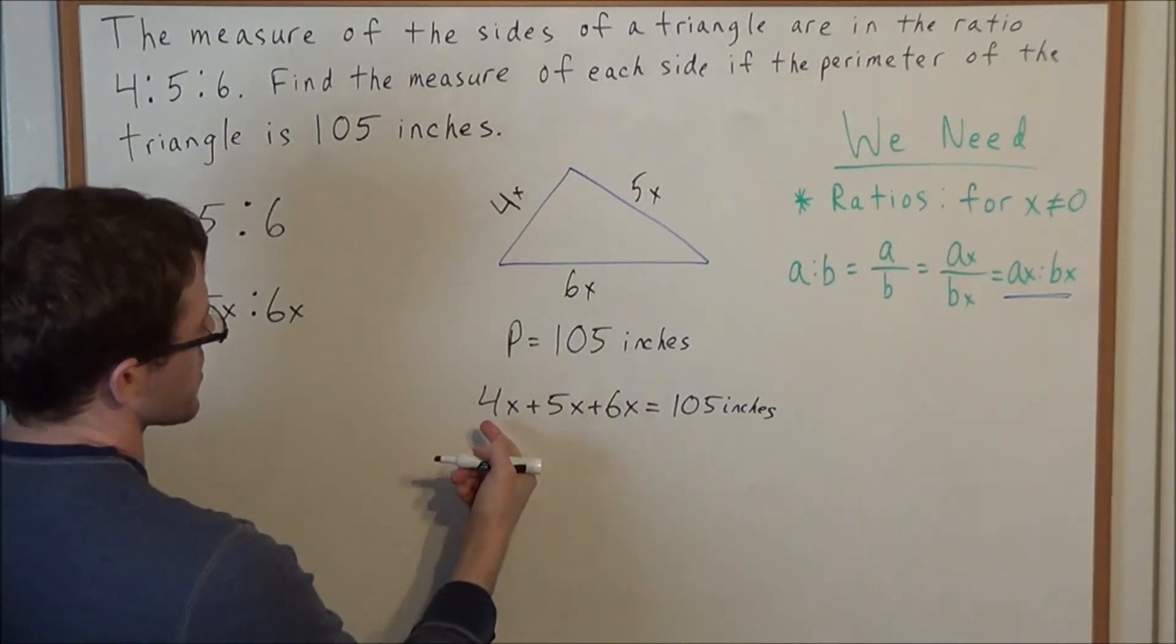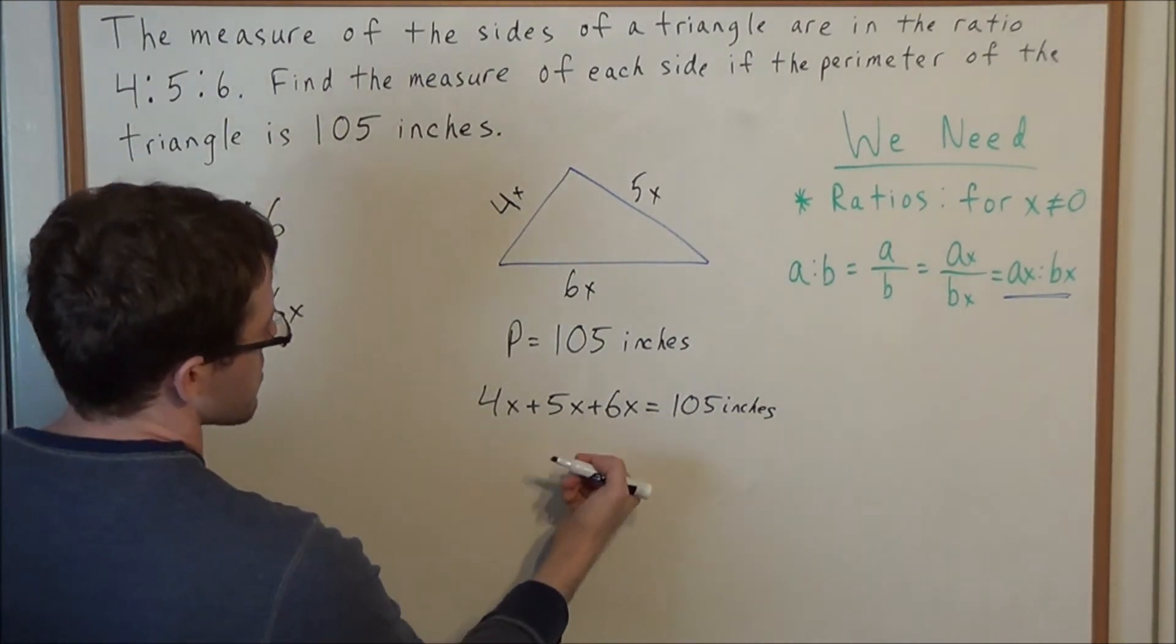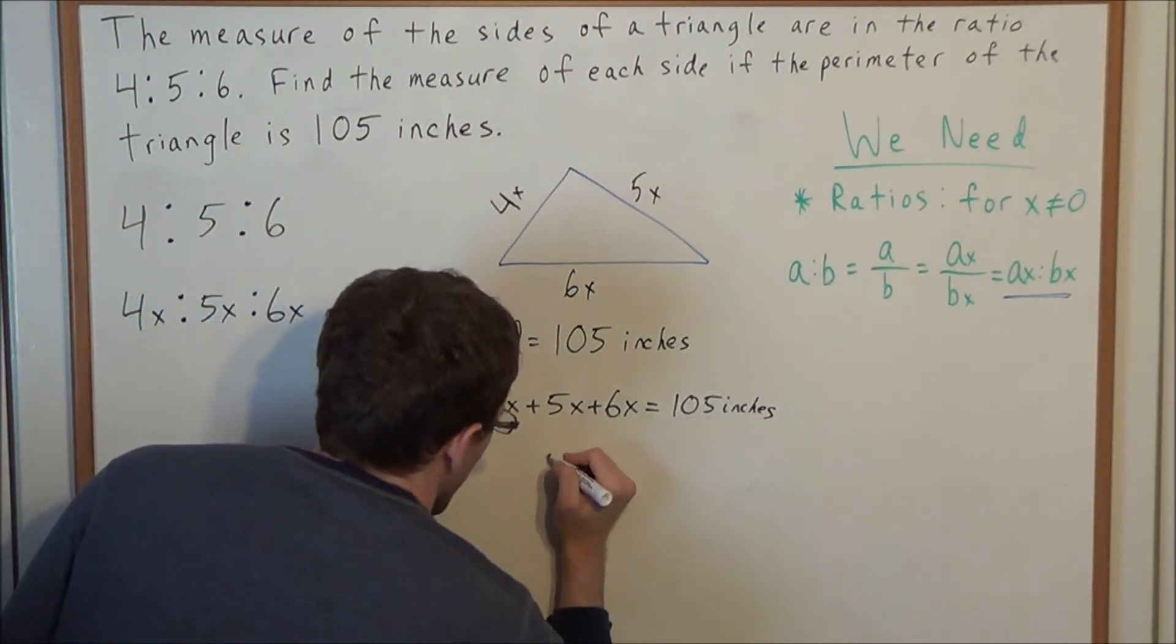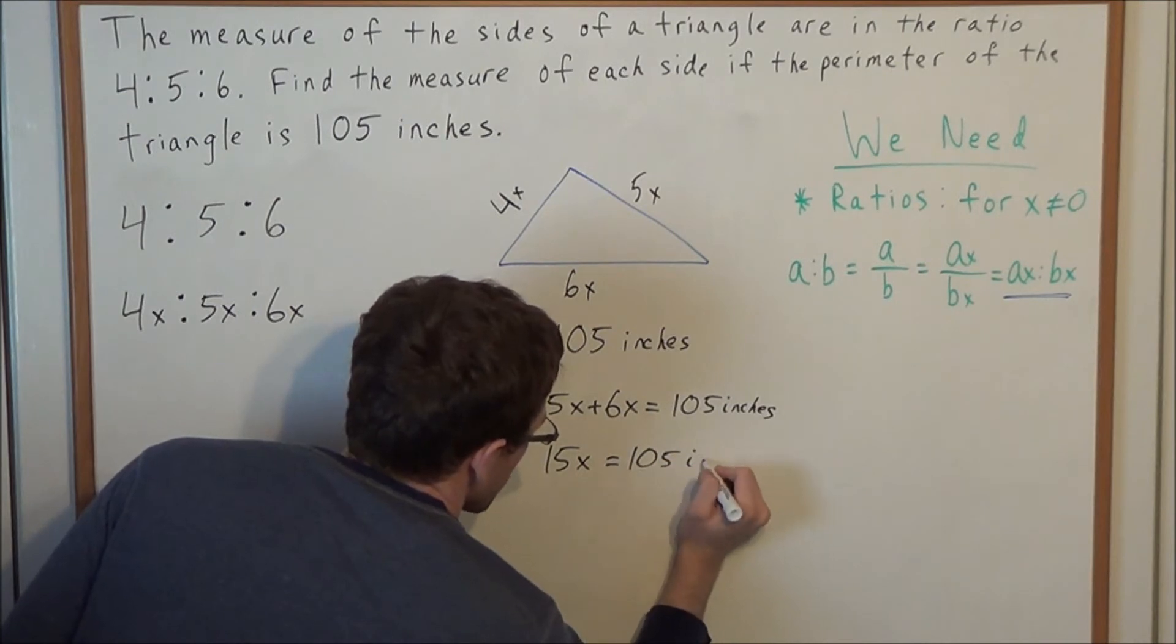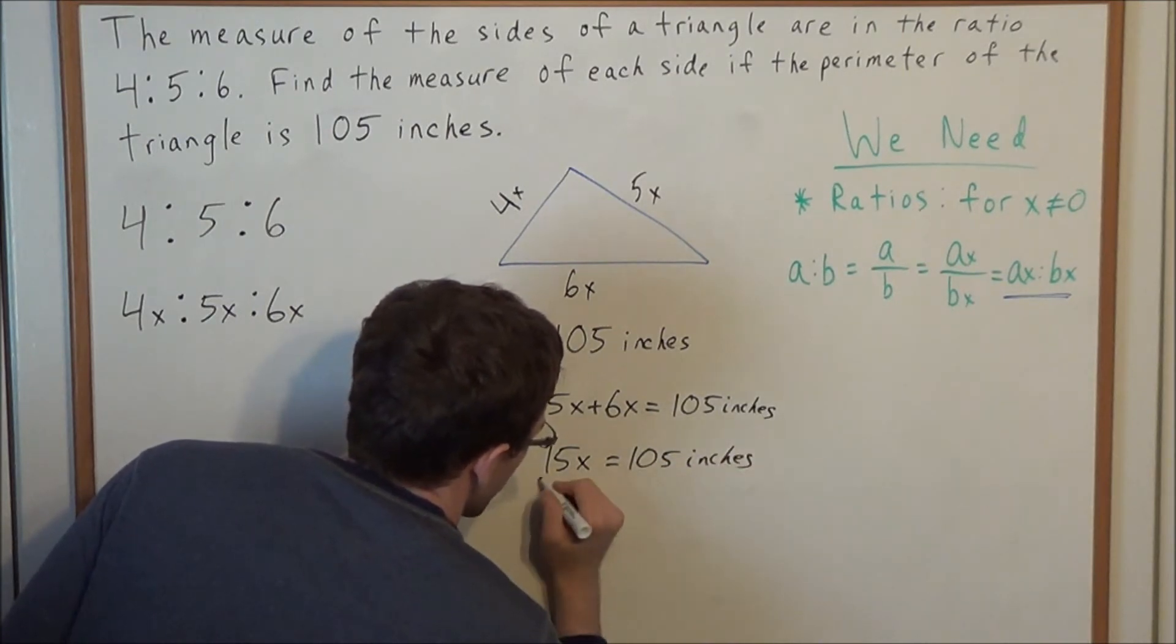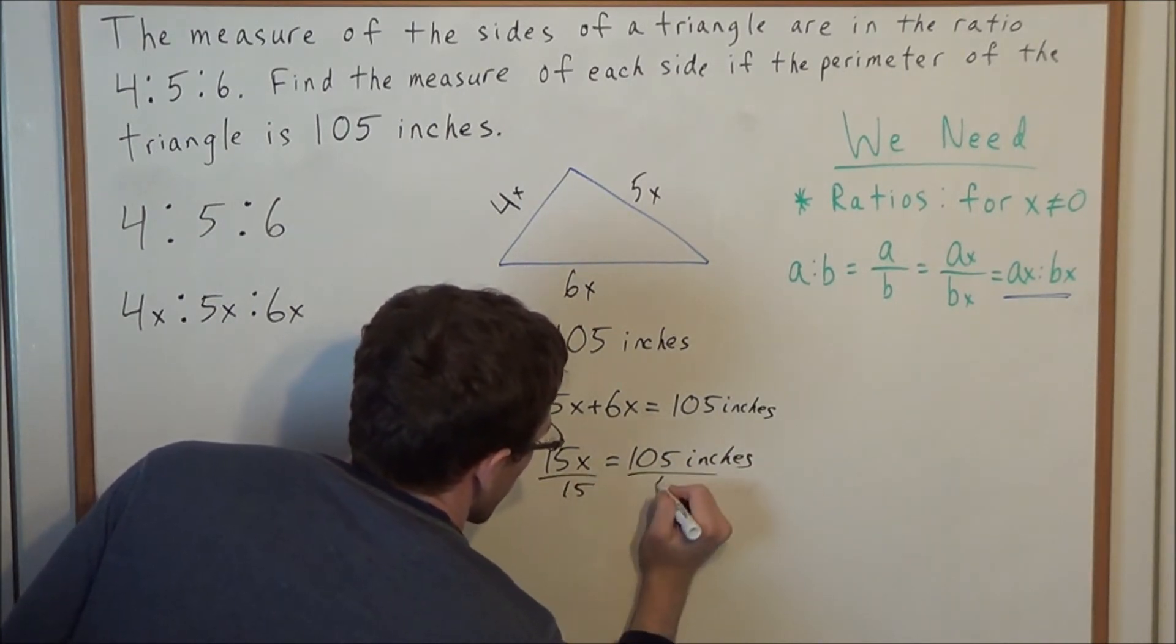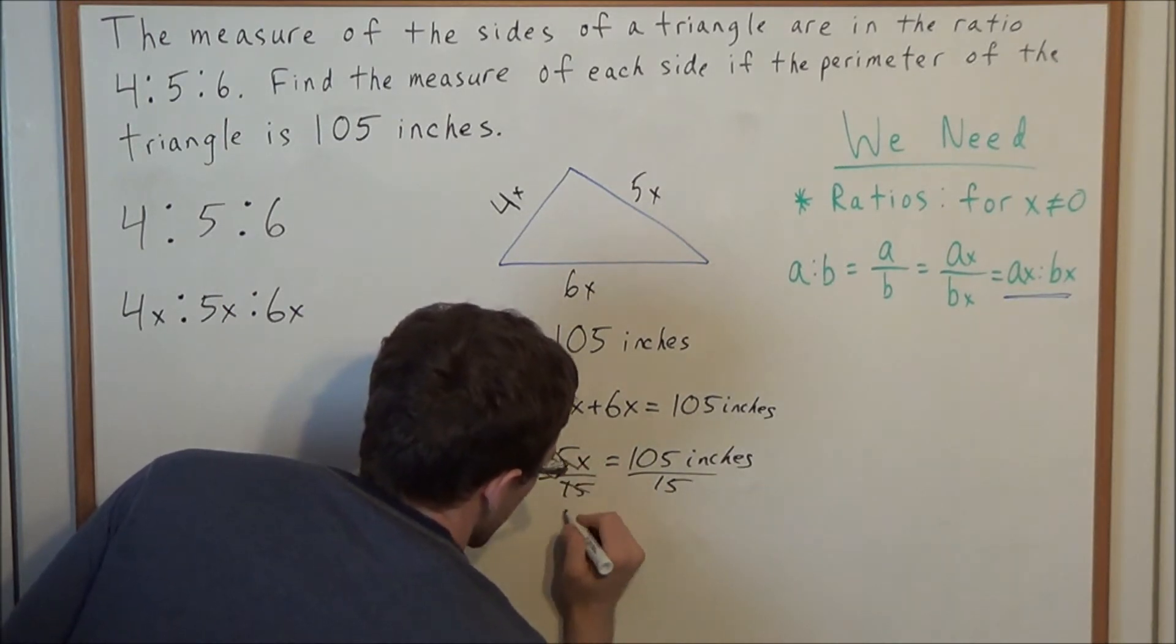We have three like terms. 4 plus 5 is 9, and 9 plus 6 is 15, so we have 15x. So 15x equals 105 inches. To solve for x, we divide by 15, which gives us x equals 7 inches.